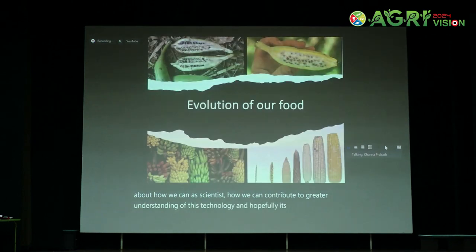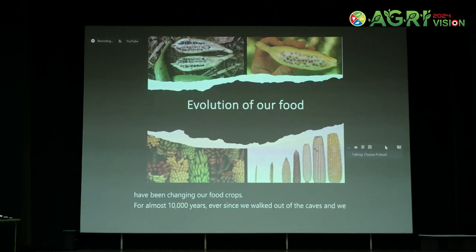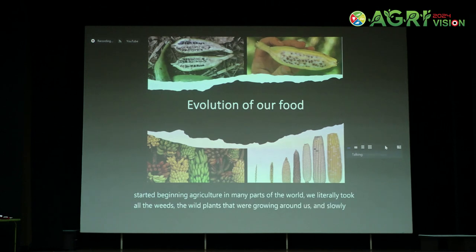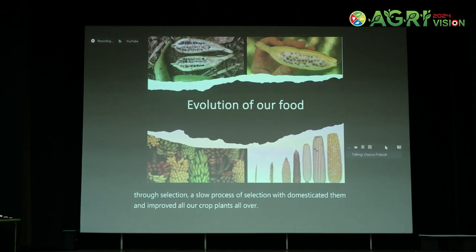So genome editing, to place it in context, we must understand that we've been changing our food crops for almost 10,000 years. Ever since we walked out of the caves and we started beginning agriculture in many parts of the world, we literally took all the weeds, the wild plants that were growing around us, and slowly through a slow process of selection, we domesticated them and improved all of our crop plants, all of our wild relatives of crop plants into crops.